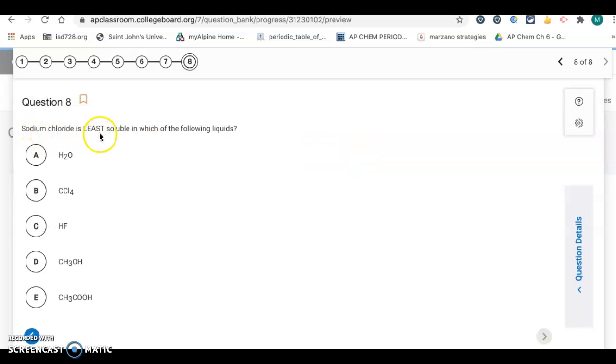Sodium chloride is least soluble in which of the following liquids. So, it's pretty much the same question as number seven. So, sodium chloride is an ionic compound. Ionic compounds are soluble in polar liquids. So, we want the one that's going to be non-polar. So, it's going to be letter B, CCl4. Because of the symmetry with a tetrahedral molecule. All these other ones are going to have hydrogen bonding. So, they're polar. So, the sodium chloride would be very soluble in those. So, it's letter B.